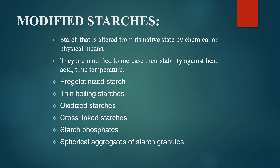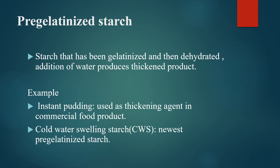Let's have a look at these types of starches. Pre-gelatinized starch is a starch that has been gelatinized and then dehydrated. Addition of water produces a thickened product. Once they are mixed with water and exposed to temperature, they readily form a thickened product.